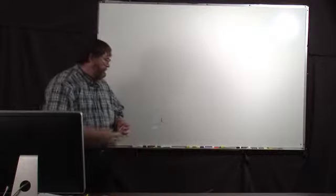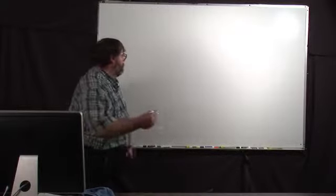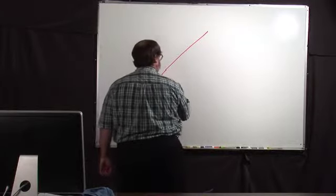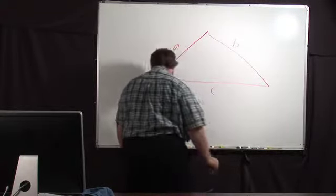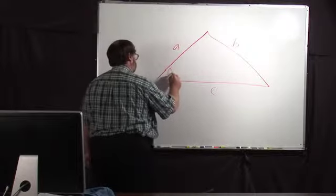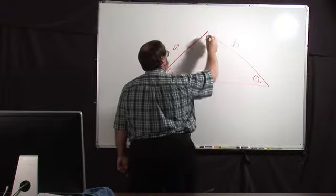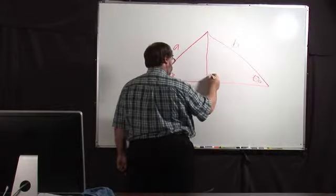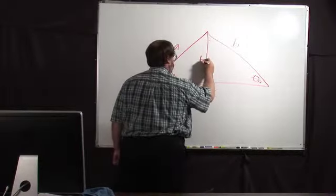Now we'll talk about another property of triangles called the Law of Sines. The Law of Sines is a statement about triangles in general, not just right triangles. Going back to a general triangle with sides A, B, and C and angles theta A, theta B, and theta C — if you drop a perpendicular line from the apex to the base of the triangle with height H, then by definition the sine of theta B equals H over A, and the sine of theta A equals H over B.